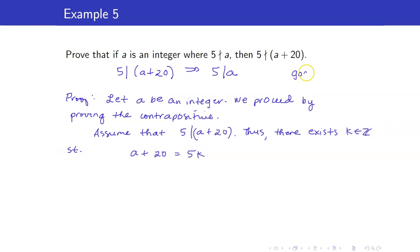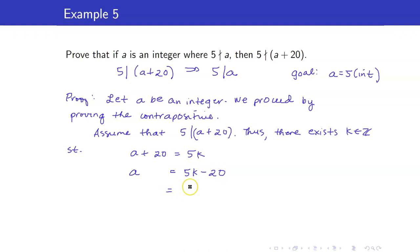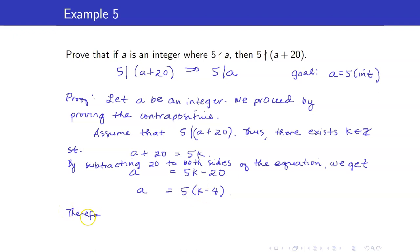Your goal is to express A as 5 times an integer. From A plus 20 equals 5K, we get A is equal to 5K minus 20. By subtracting 20 from both sides of the equation, we get A equals 5K minus 20, which is equal to 5 times (K minus 4). Therefore, 5 divides A. I already omitted the part that K minus 4 is an integer, as I am assuming the reader can see that fact.